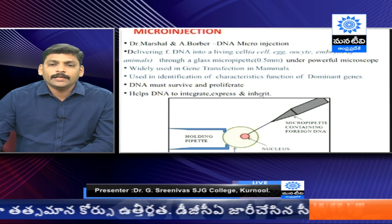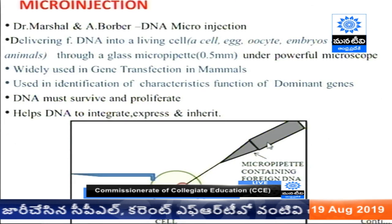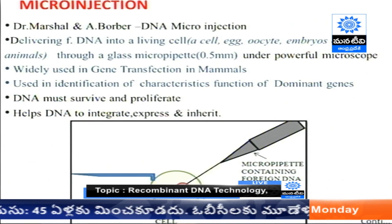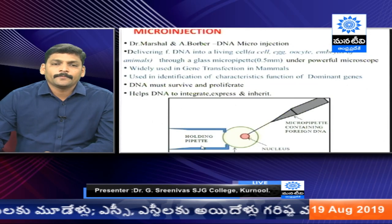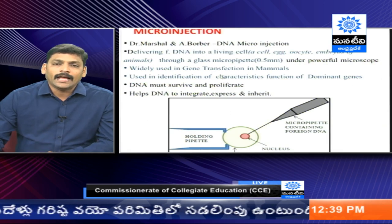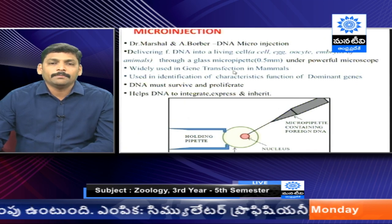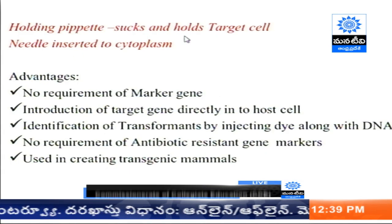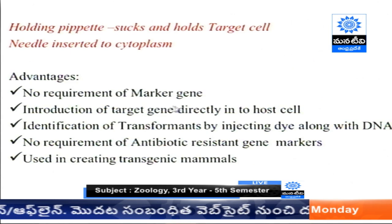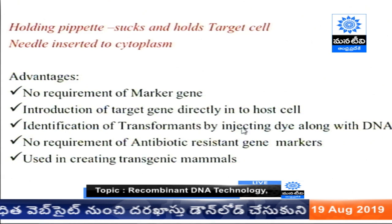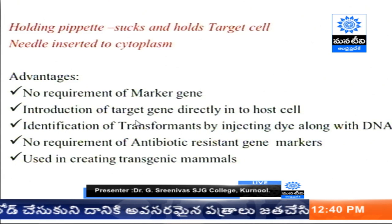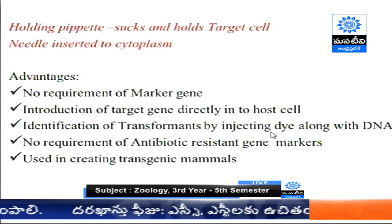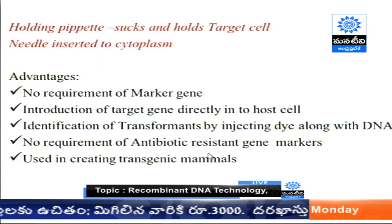Micro-injection uses a micro needle to directly incorporate recombinant DNA into the cell while holding it with a holding pipette. This method is commonly used for gene transfer or gene transfection in mammals. The holding pipette holds the target cell, the desired DNA is inserted, no marker gene or specialized mechanisms are required, the target gene directly enters the cell, and a dye is used to mark whether the DNA is present. This method is useful for creating transgenic mammals.